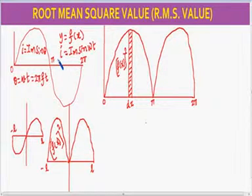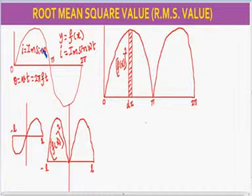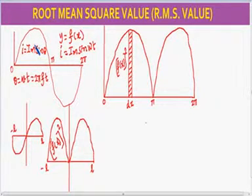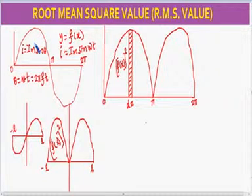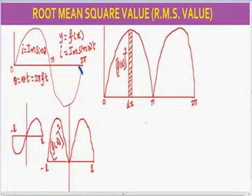So the current flow is in the same direction, that is from the generating station to the consumer station. Now if I is equal to I_M sine theta, that is given as an example. Simply, the upper and lower vibrations are spreading the current in one direction.